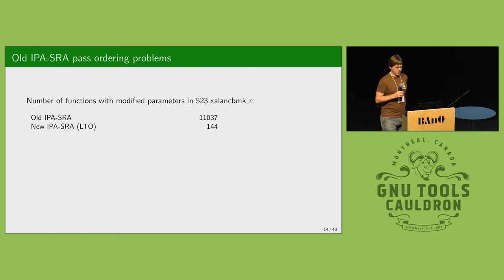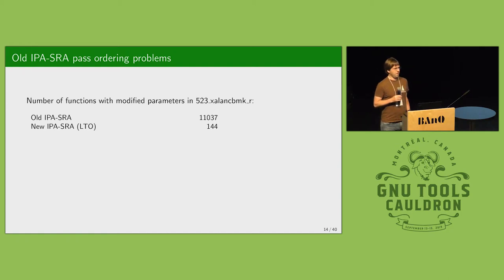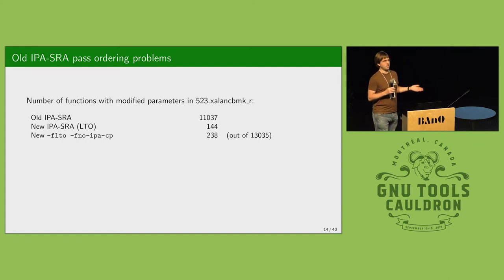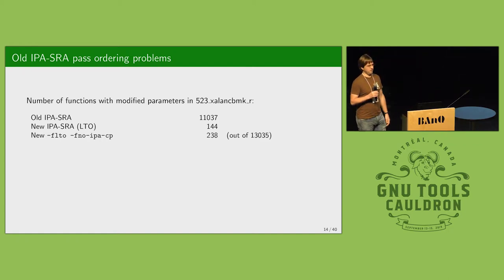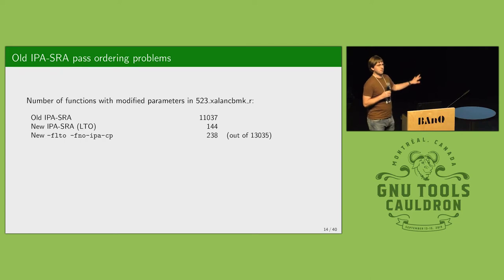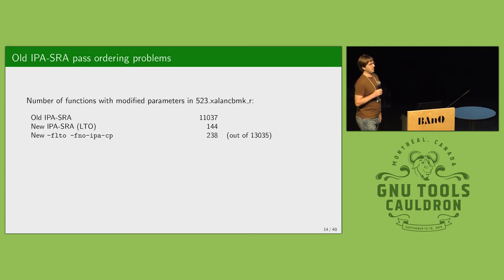I thought maybe it was all parameters that IPA constant propagation had already removed — but no, when I switched off constant propagation there were a few more modified functions, still definitely not on the order of 11,000. I also noticed that the total number of functions seen at the whole-program analysis phase was 13,000 — roughly the same order as the number of functions the old pass modified.